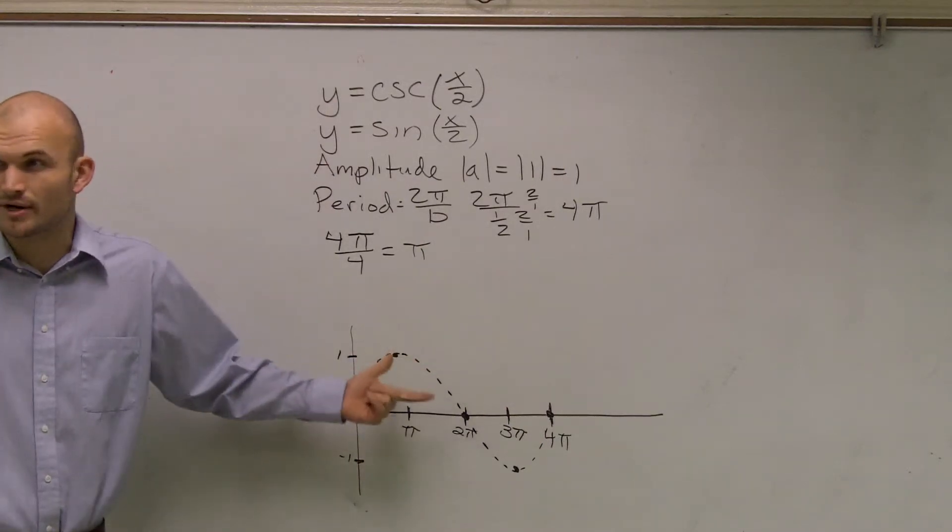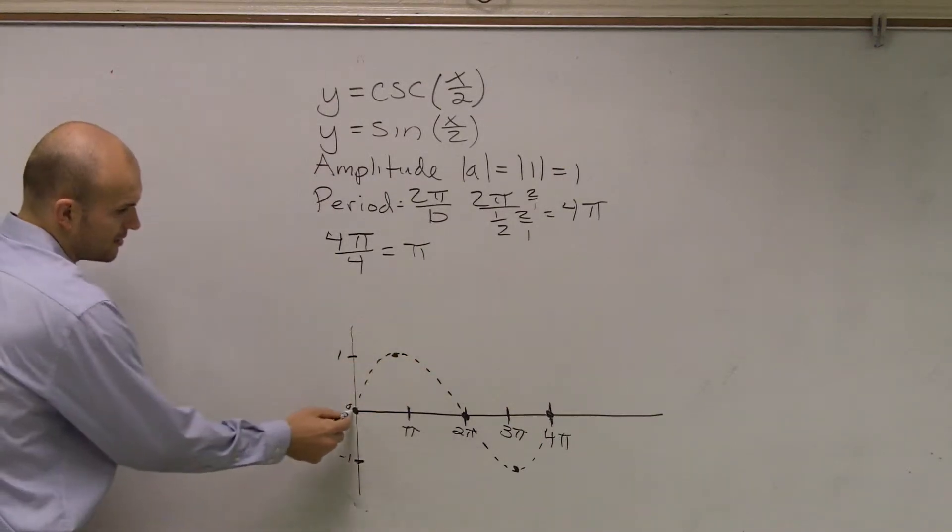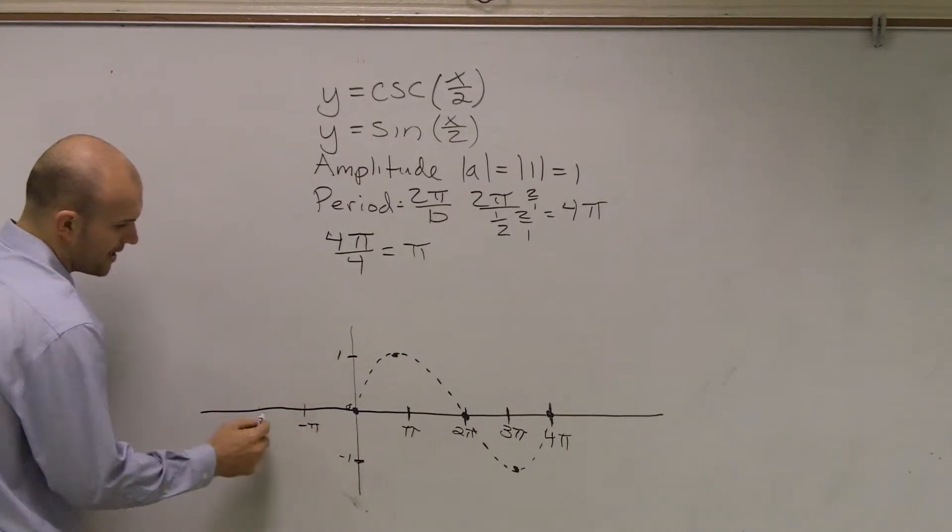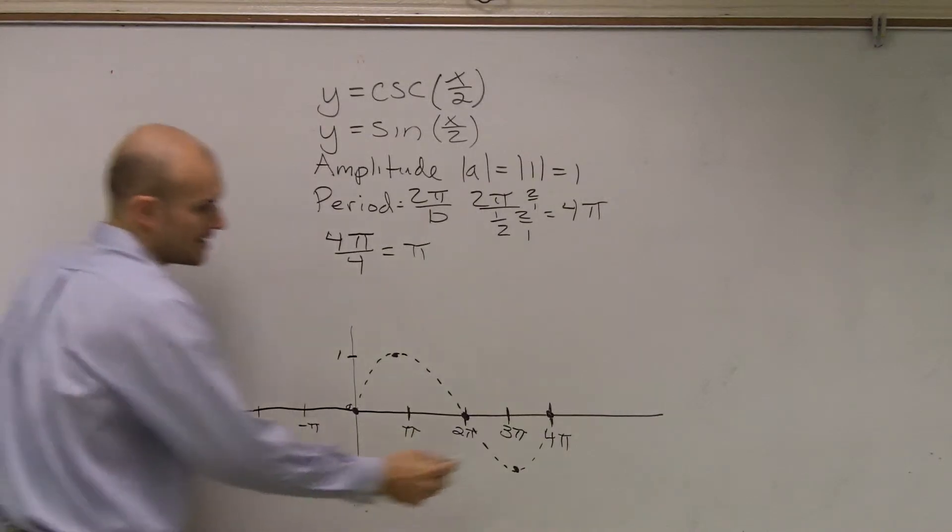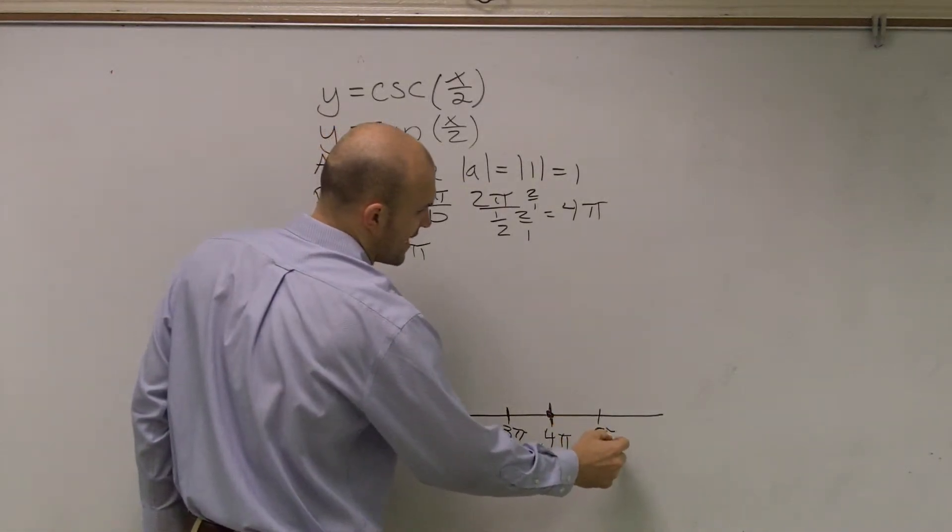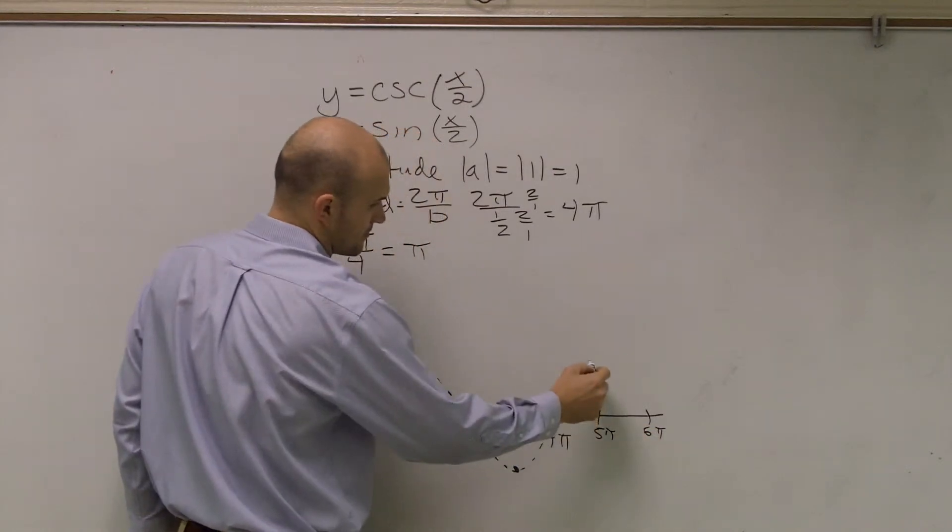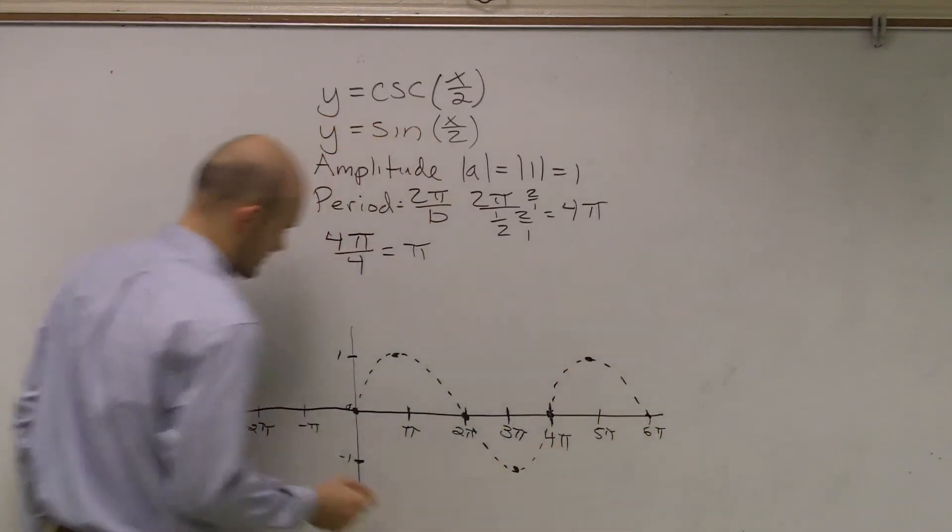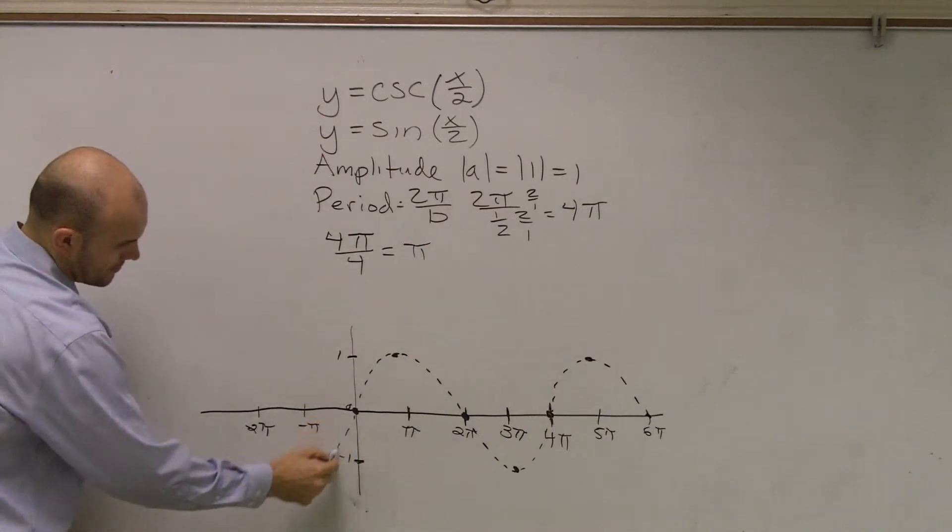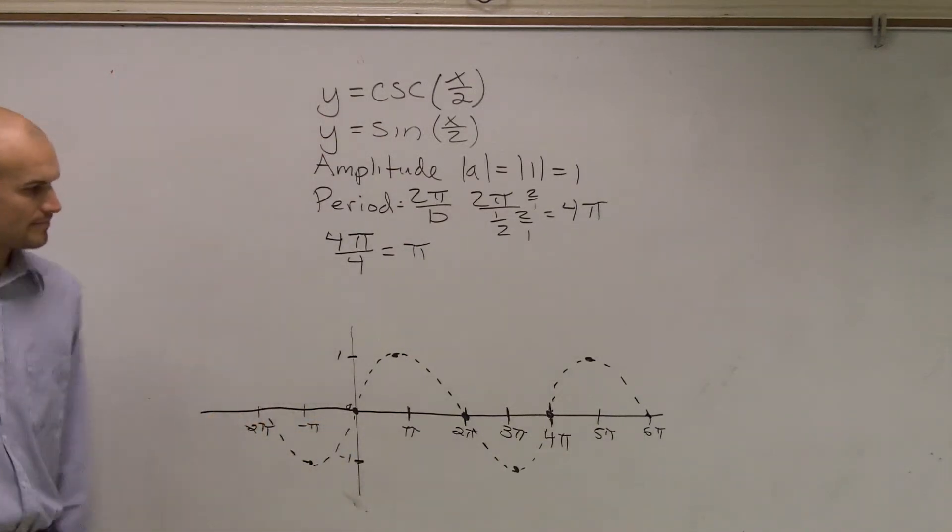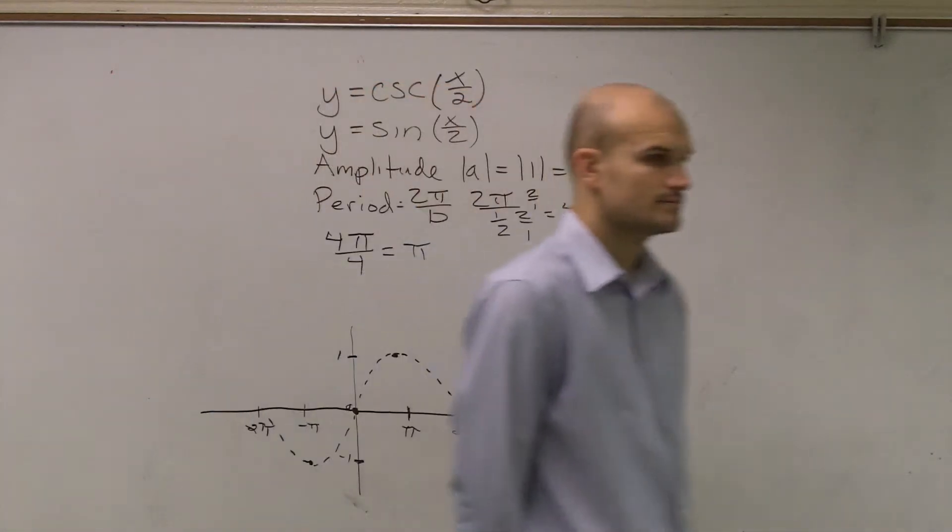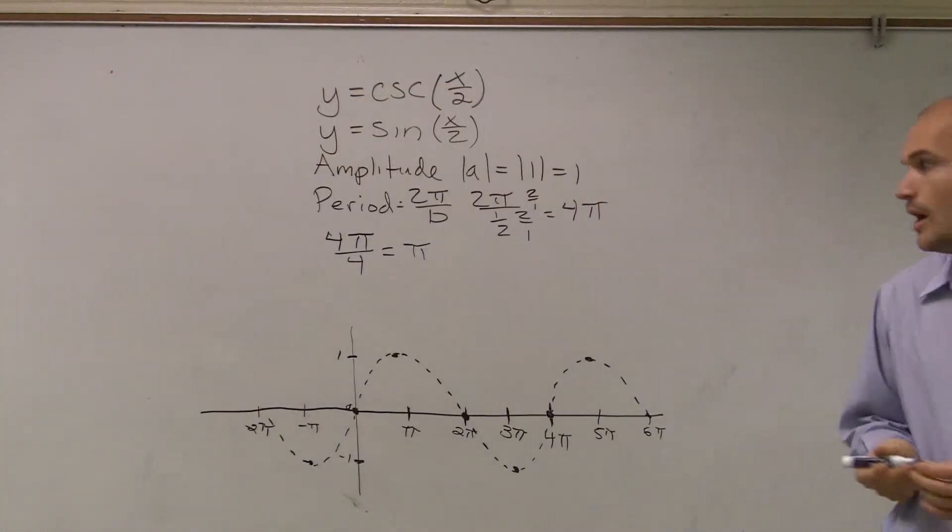And then if I want to continue, we always want to do like two periods. Well we can go in the negative direction. This will be negative π, negative 2π, and here we can do 5π, 6π. So is everybody following me so far with what I've done?